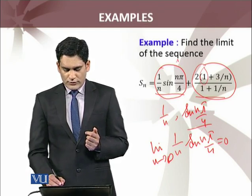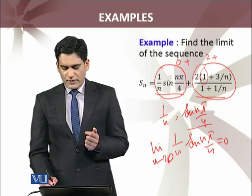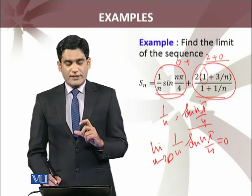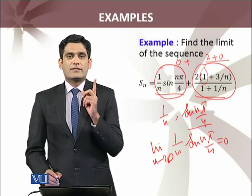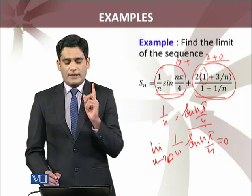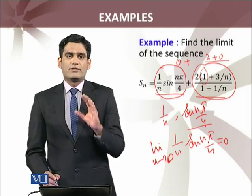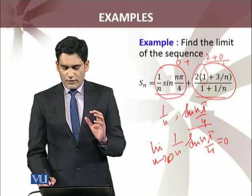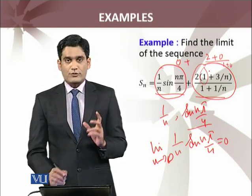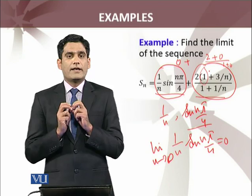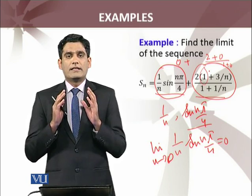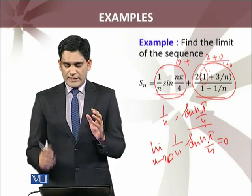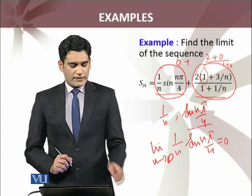So the numerator gives 2 + 0 = 2, since the limit of 3/n is 0. Looking at the denominator: it has 1 — which can be considered a constant sequence with every term equal to 1 — plus 1/n, whose limit is again 0. So the denominator limit is 1 + 0 = 1. Therefore, this seemingly complicated sequence has limit 2, which we have now calculated using the previous result.